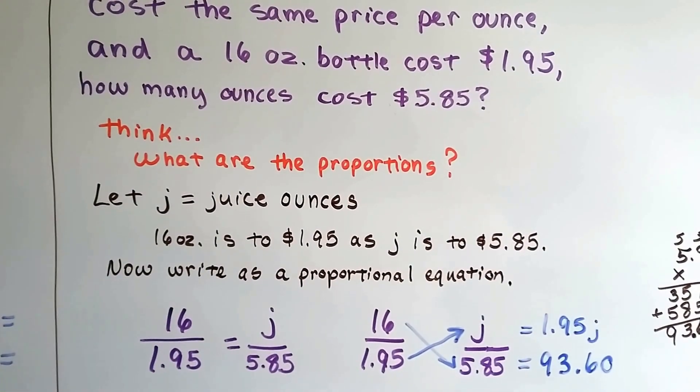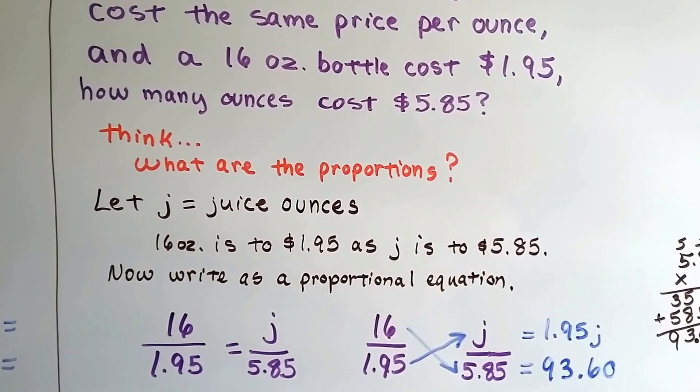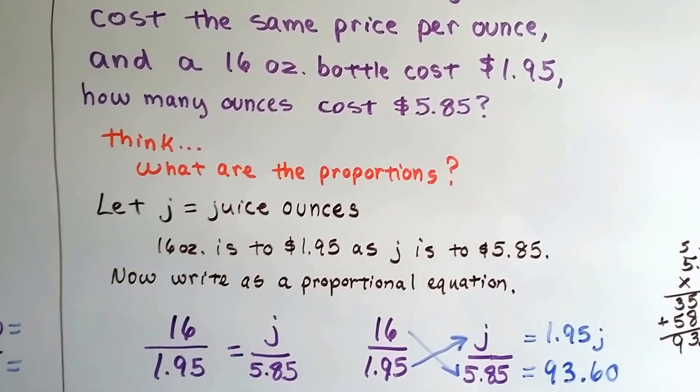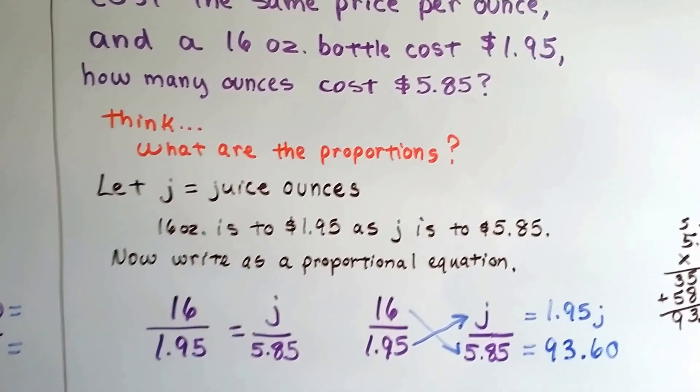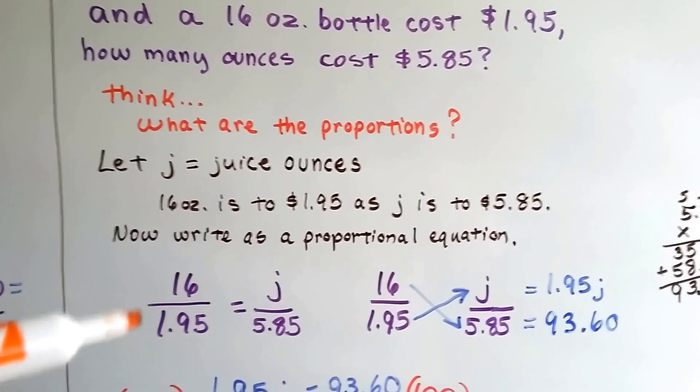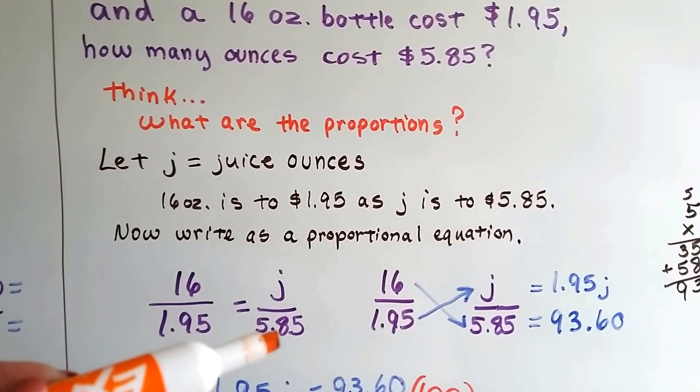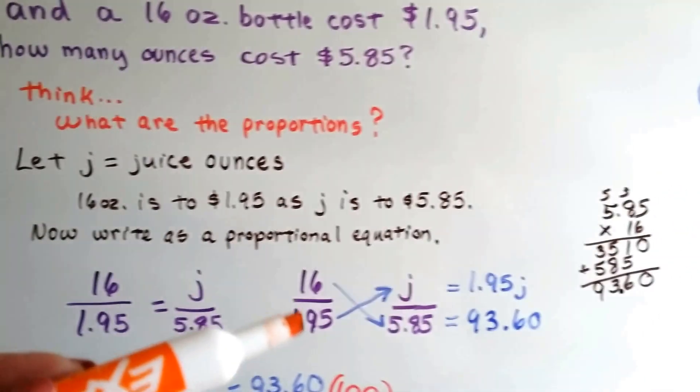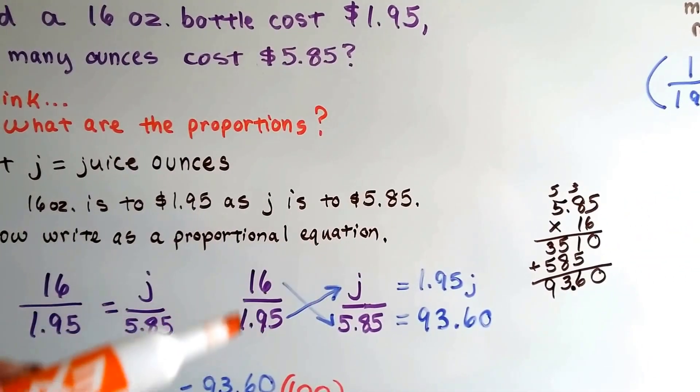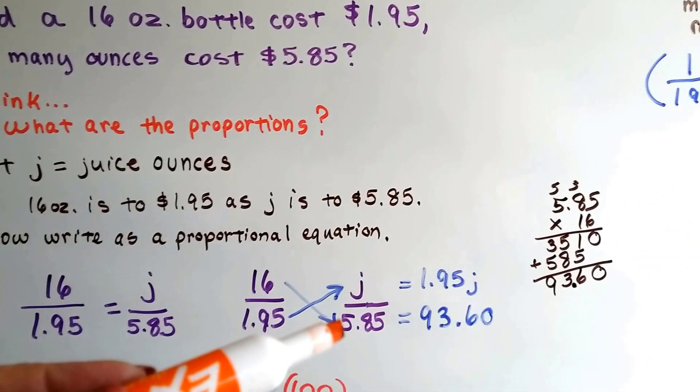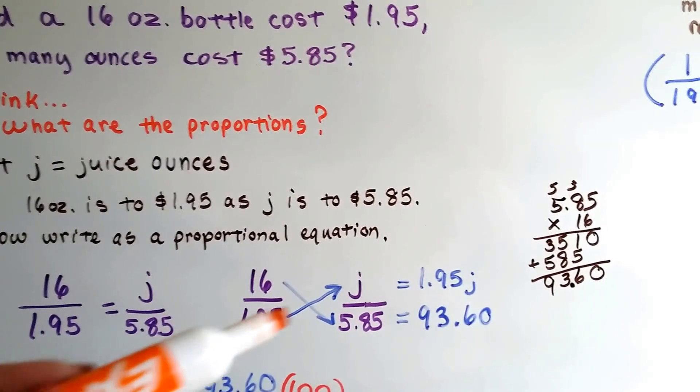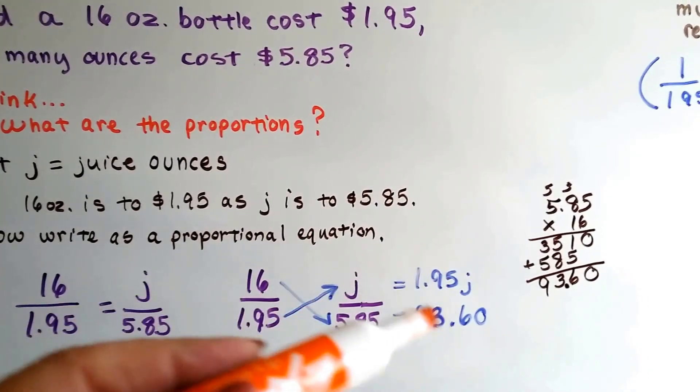16 ounces is to $1.95 as j is to $5.85. So now we write as a proportional equation. 16 is to $1.95 as j is to $5.85. And we're going to cross multiply. So this is 16 times 5.85, and this is 1.95 times j. That's our equation.